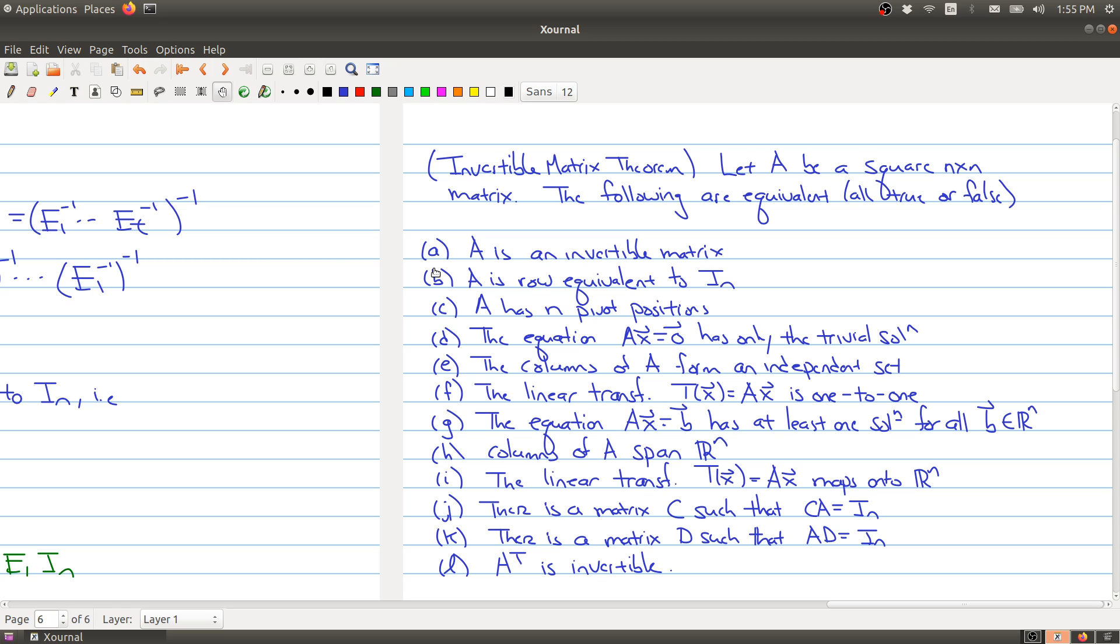So A and B is saying that A is an invertible matrix if A is row equivalent to the identity, or if A is row equivalent to the identity then A is an invertible matrix. Now hopefully that seems familiar because we just proved this right, we just proved that both of these statements mean the same thing. But what else can we get? Well being invertible means also that you have to have N pivot positions. You can see that from the identity matrix if it's row equivalent to the identity matrix.